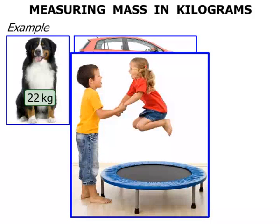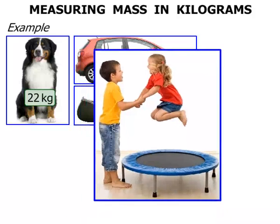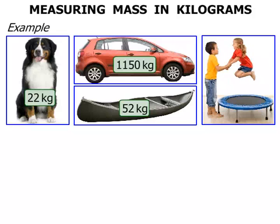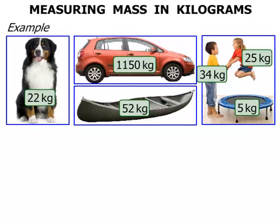There's a young boy here bouncing on the trampoline with his sister. Let's have a look at each one. The girl has a mass of 25 kilograms. The boy has a mass of 34 kilograms. And the trampoline they're bouncing on only has a mass of 5 kilograms.